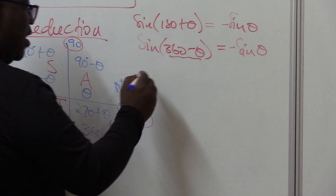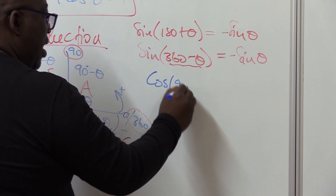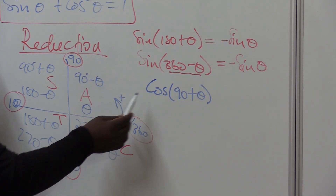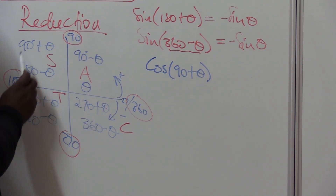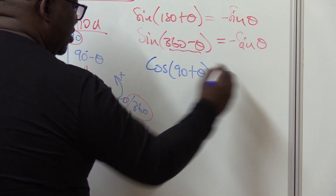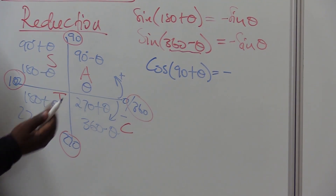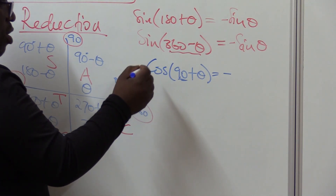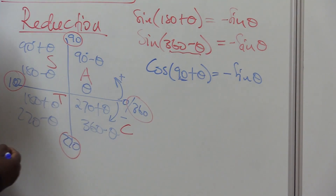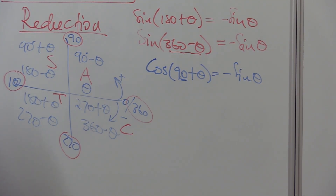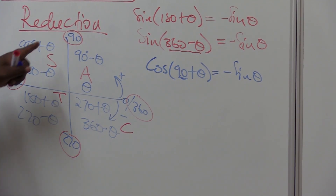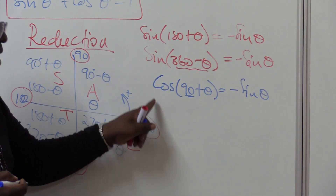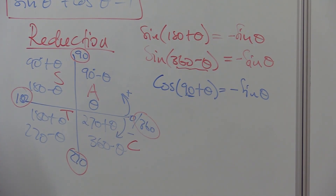For example, cos of (90 degrees plus theta): 90 plus is the second quadrant. Only sine is positive in the second quadrant, so cosine is negative there. Additionally, because we've got 90, the ratio will change from cos to sine. So cos(90 plus theta) equals negative sine theta. Whenever we deal with 90 and 270, if it was cosine it will change into sine, and if it was sine it will change into cosine.